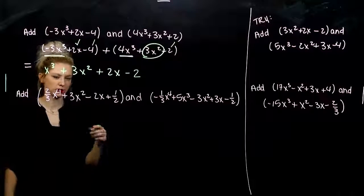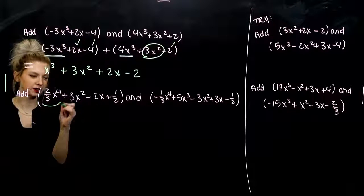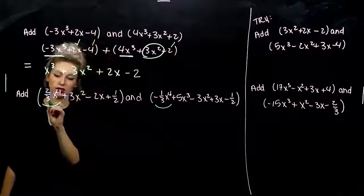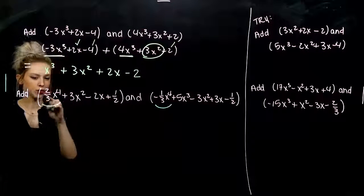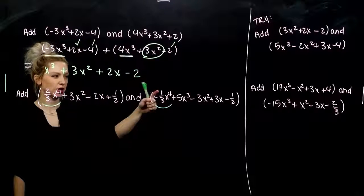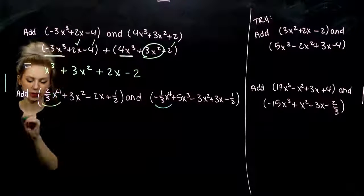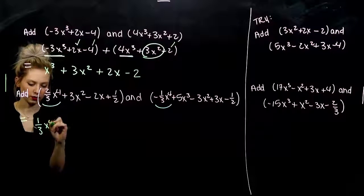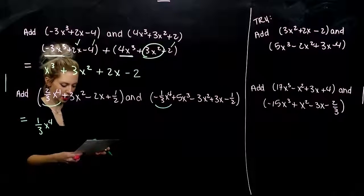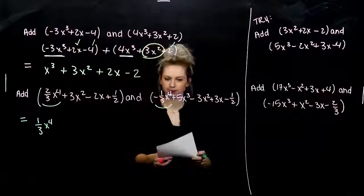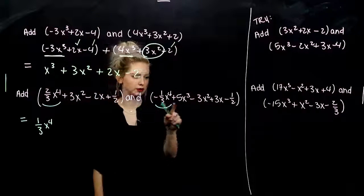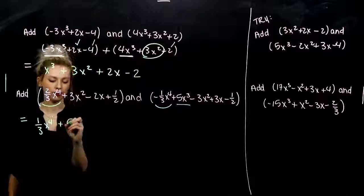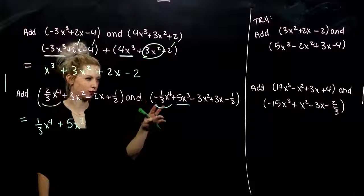Now for the second example. How many x to the fourths do I have? They have the same denominators — nice. I've got 2 thirds and I'm taking away 1 third, so 1 third x to the fourth. That was our highest power. And do we have any cubed powers? We do — right here I've got 1, so we'll add 5x cubed. He didn't have anybody to combine with.